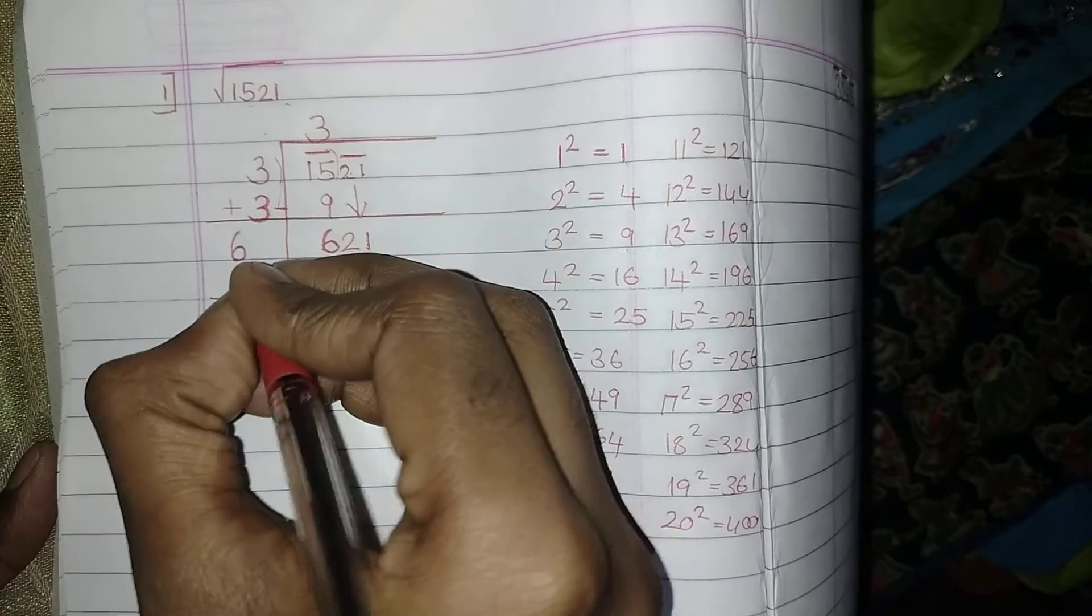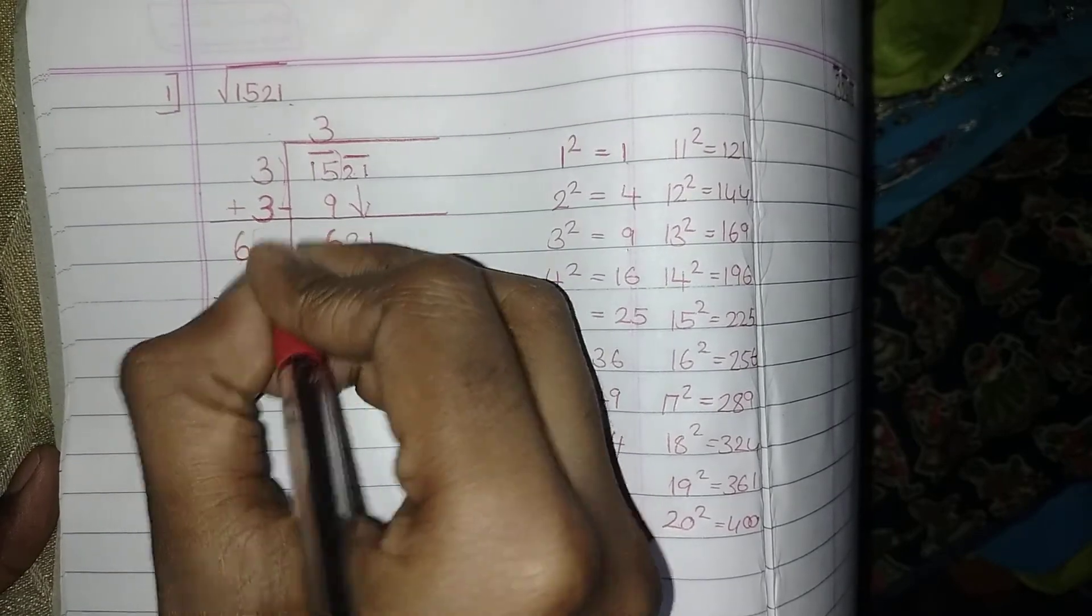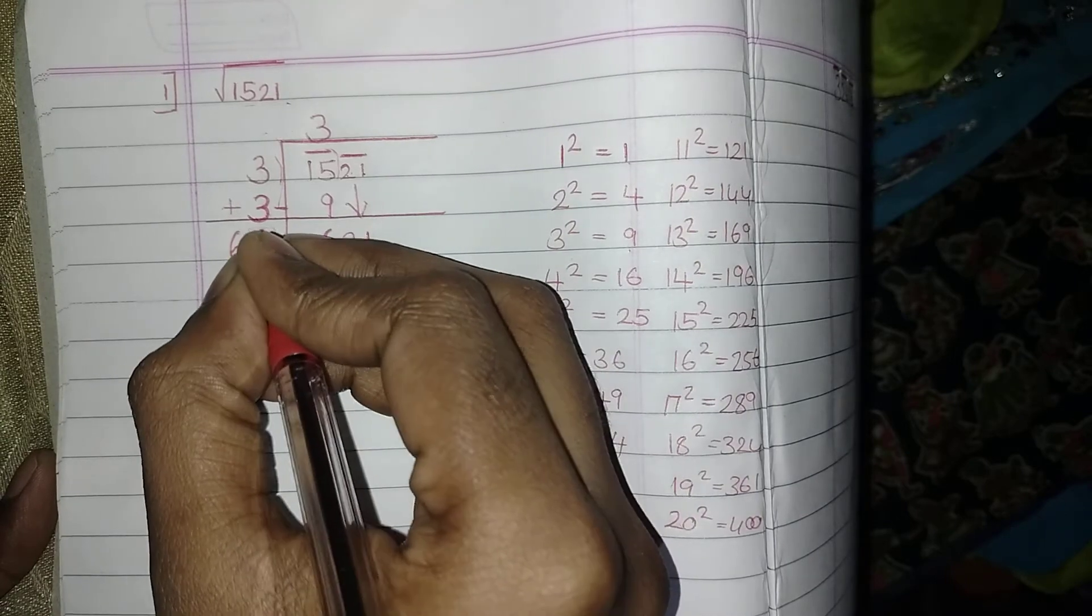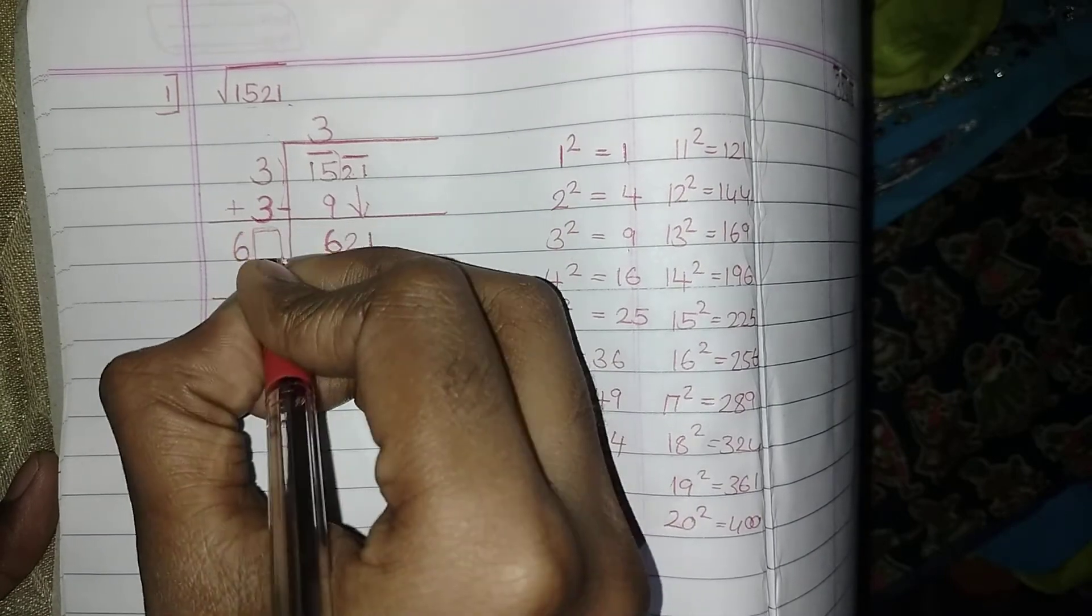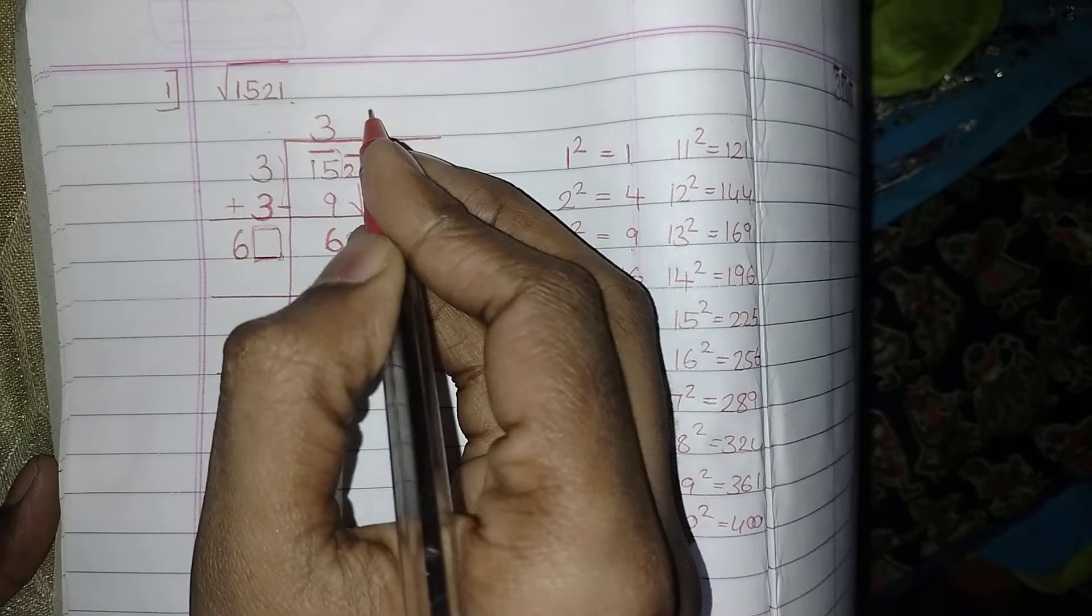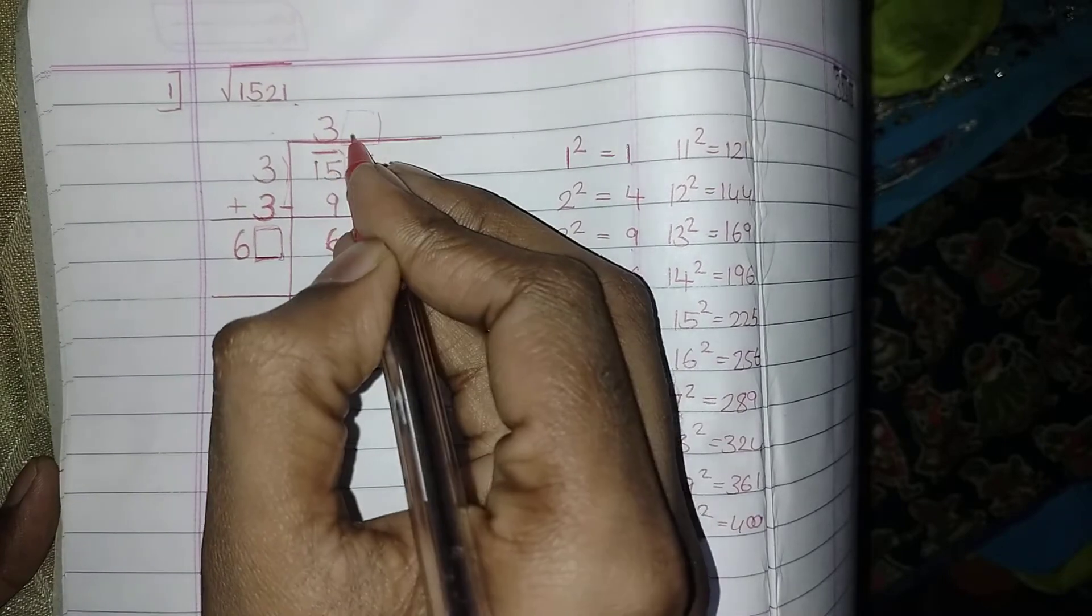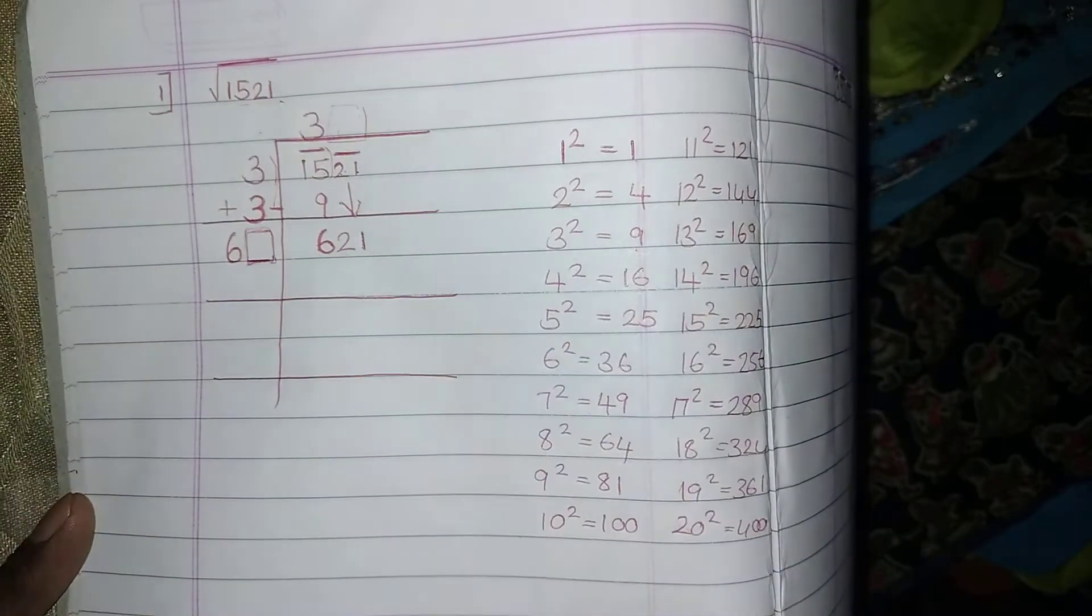Now you should decide which number I should write here such that the same digit, whatever I am writing here, if it is multiplied with the same digit, the same digit if I multiply with that number, I should get 621.